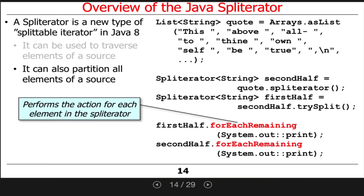Once we've done the split, we can do something like this to illustrate the point — you probably wouldn't write code like this, but it illustrates the idea. We can say to the first half: print everything else out that you have in your spliterator, so it'll output 'This above all to.' Then we say to the second half: print out the rest, and that'll say 'thine own self be true.' That's what forEachRemaining does — it basically says, whatever else you have, call this action on it, which in this case is to print.